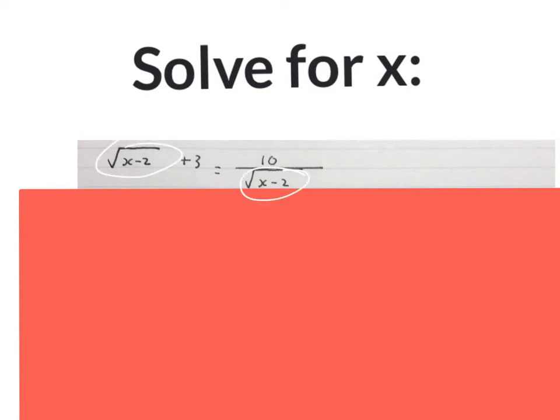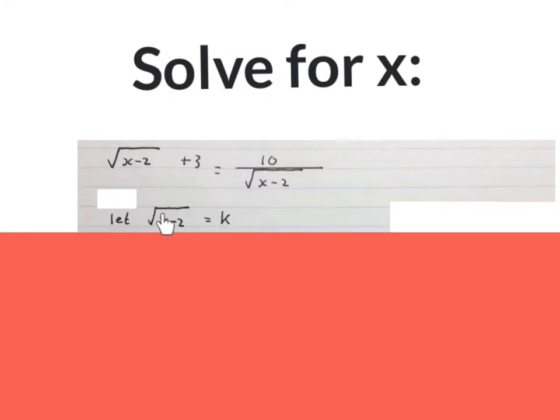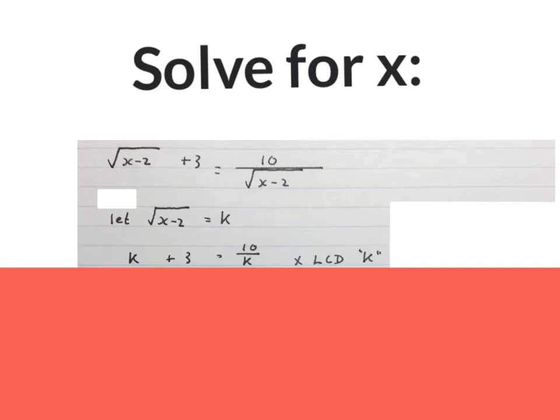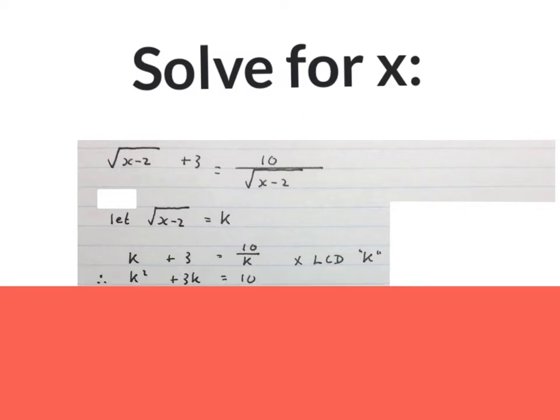This time, we'll make these two pieces x. So we write, let this square root of x minus 2 equal to K. Replace them by K, and then times by the LCD, which is K in this case.